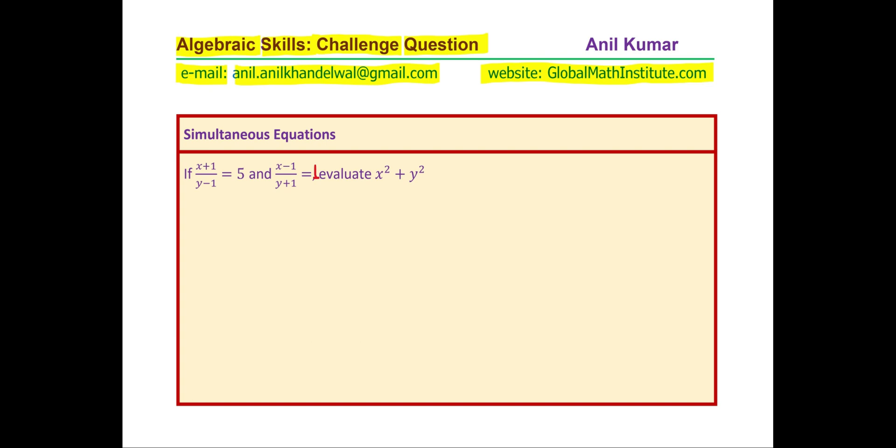Let me rewrite the question. It is x plus 1 over y minus 1 equal to 5 and x minus 1 over y plus 1 equals to 1. In that case, you have to find x square plus y square.